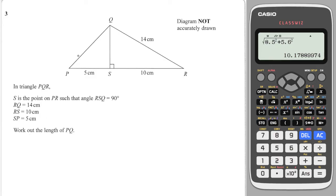Okay, next question — slightly trickier. We want to work out PQ along here; let's call that H. But in the first instance we look at this triangle here and there's not enough information, because we're looking for H and we have five but we don't have QS. Luckily the triangle to the right has two bits of information, so we can work out QS — let's call it X.